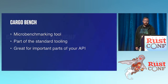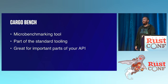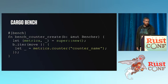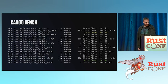Cargo Bench is a micro benchmarking tool — it's part of the standard toolset. It's really great for the high-use parts of your API. Here's an example of a micro benchmark using Cargo Bench in Taco, where we benchmark how long it takes to make a new counter. The output looks something like this — here I've highlighted 23 nanoseconds and 47 nanoseconds — those numbers look great, unless you're really paying attention.